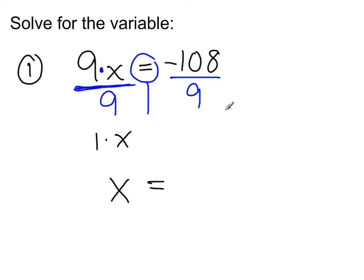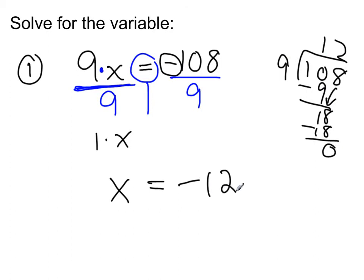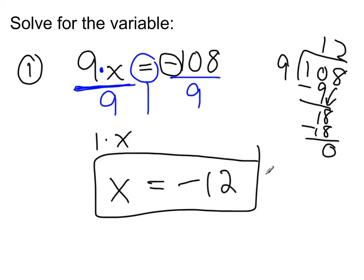Now simplify the right side: 9 goes into 108. Doing long division: 9 times 1 is the closest to 10, subtract to get 1, bring down the 8, and 9 times 2 equals 18 with no remainder — giving 12. Don't forget the negative sign: a negative divided by a positive is a negative. So x equals negative 12.